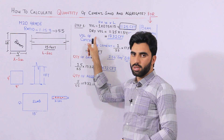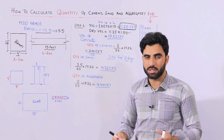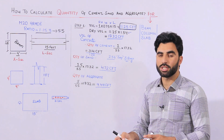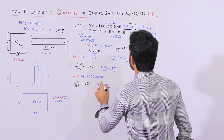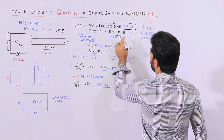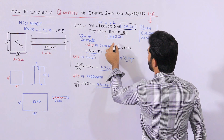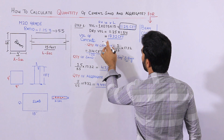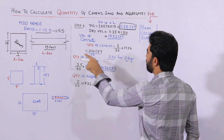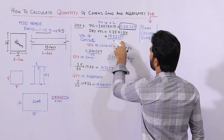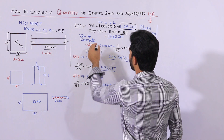Now let me convert it to the dry volume, because the normal volume of concrete increases when we convert it to dry material — it increases by 54 percent. Therefore, dry volume equals volume of beam multiplied by 1.54. When you do the multiplication, the total dry volume of concrete in this beam is 17.32 cubic feet.